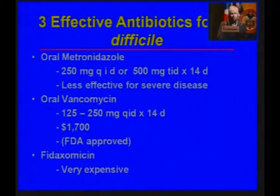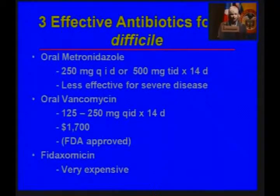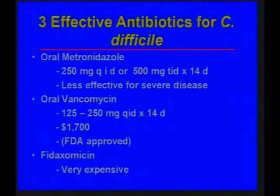In the U.S., there are three antibiotics used for Clostridium difficile. Most of us use oral metronidazole, usually a dose of 500 milligrams three times a day. Ten days is probably just as good as 14 days — we've been developing some guidelines, and that's what we've come up with evidence-based, so maybe I should update these slides and change to a 10-day course.